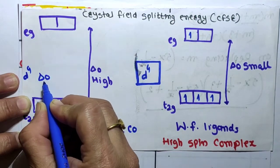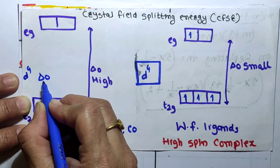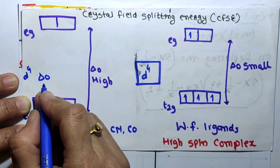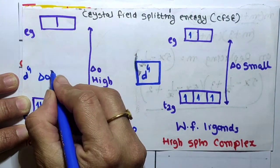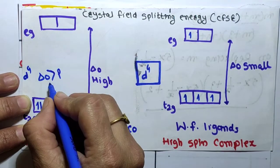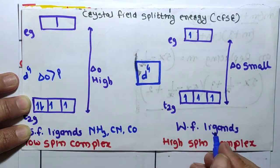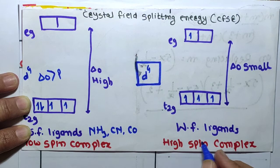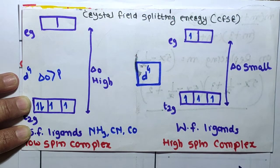In a low spin complex, the octahedral complex energy delta O is greater than the pairing energy. Weak field ligands form a high spin complex where electrons fill both t2g and eg levels.